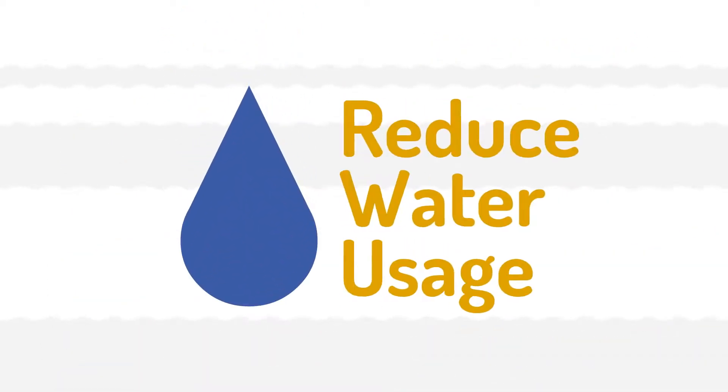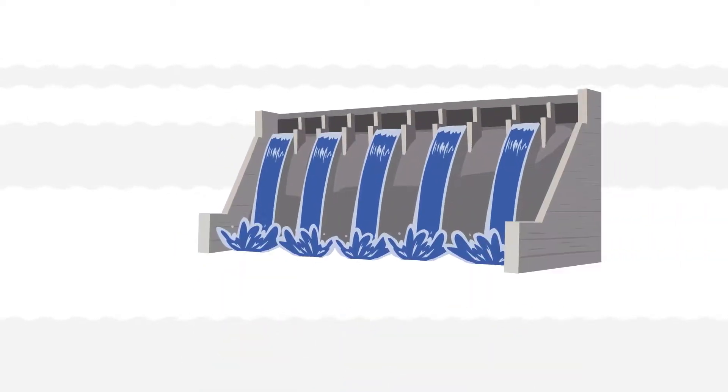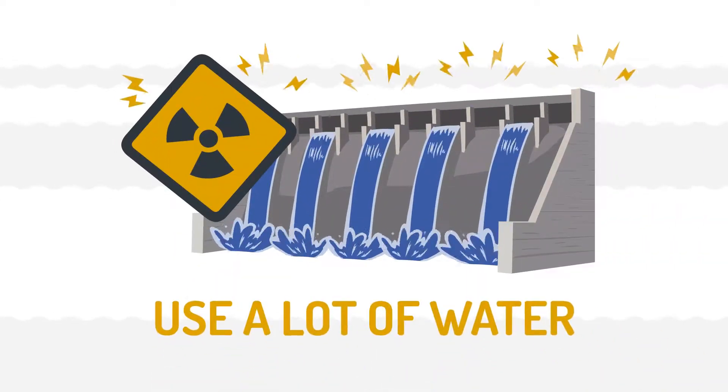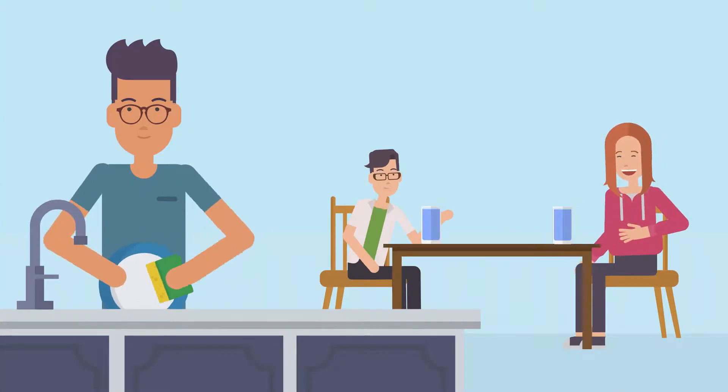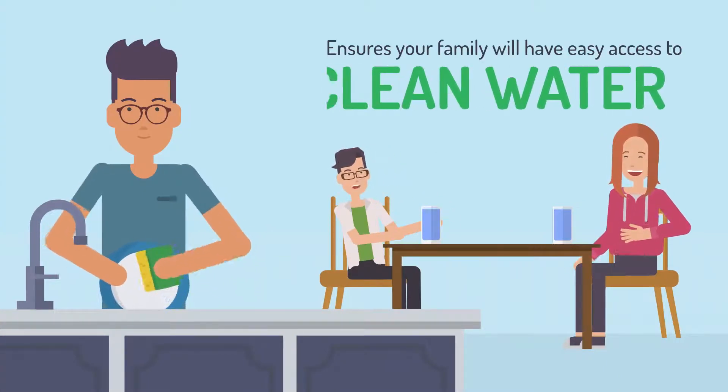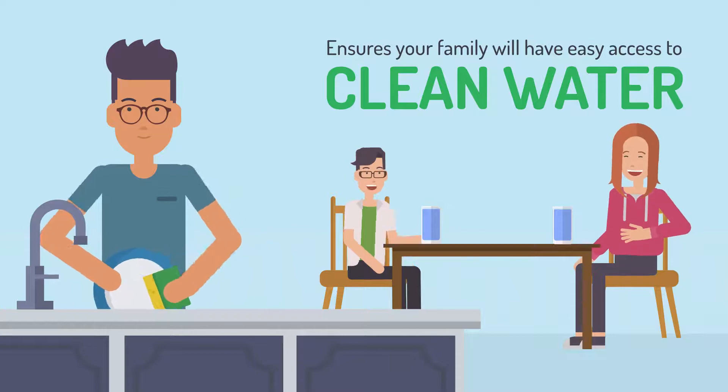Solar panels also reduce water usage. Hydropower and nuclear energy both use a lot of water to produce energy. Moving away from these power sources ensures your family will have easy access to clean water for years to come.